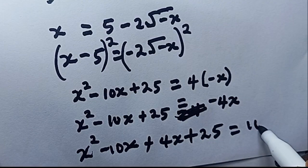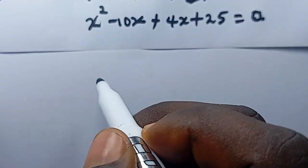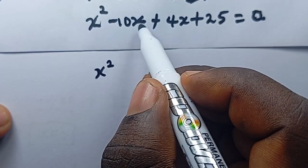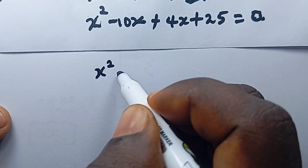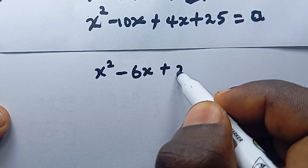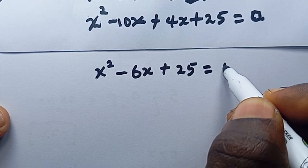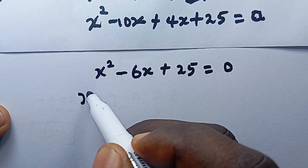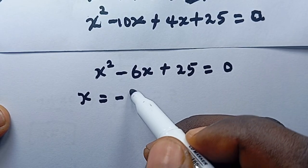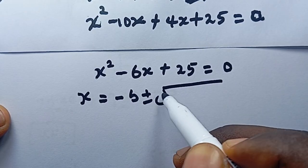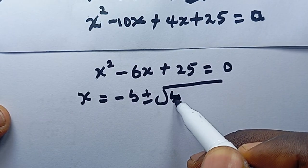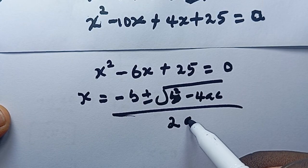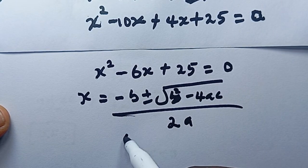Adding 4x to both sides gives x² - 6x + 25 = 0. This is a quadratic equation, and we can solve it using the quadratic formula: x = (-b ± √(b² - 4ac)) / (2a).